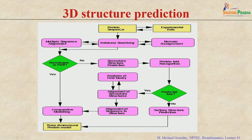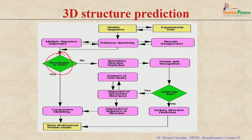To predict the structure of a protein sequence, you first search the PDB database using BLAST. If there is significant sequence identity with any known structure, you perform multiple sequence alignment, identify conserved regions, and use homology modeling. If no significant homology is found in PDB, you proceed to the next step — secondary structure prediction.